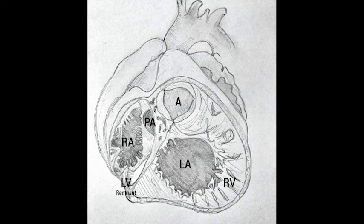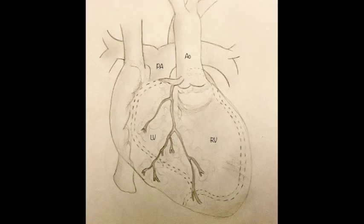CCTGA is also often associated with other defects, impacting the decision of the strategy for surgical repair. The indication for surgery is generally driven by the presence of symptoms or, in asymptomatic patients, by the evidence of declining right ventricular function and worsening tricuspid regurgitation.